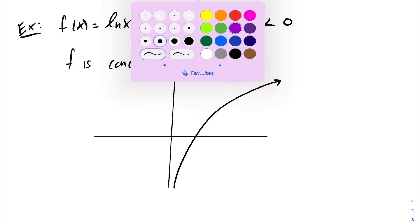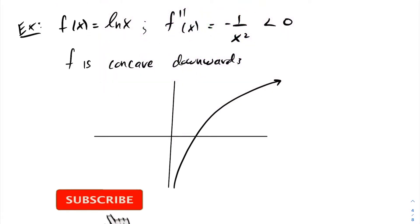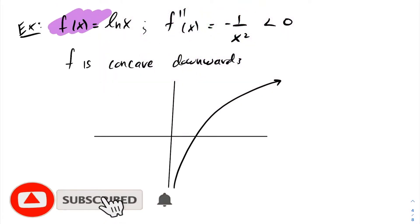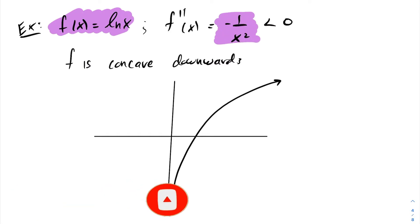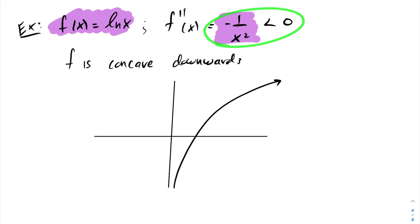Let's look at another. For the following function, we have f at x equals ln of x. If you go ahead and take your second derivative, you find that the second derivative of ln of x is negative one over x squared. This is always going to be less than zero. And because of that, the function will be said to be concave downwards.